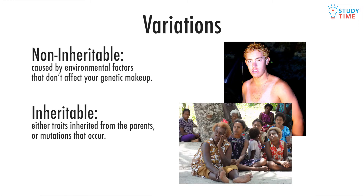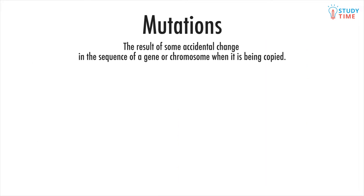Inheritable variations are either traits inherited from the parents or mutations that occur. Mutations are the result of some accidental change in the sequence of a gene or chromosome when it's being copied.